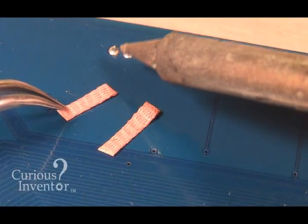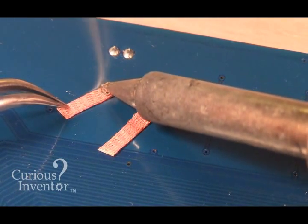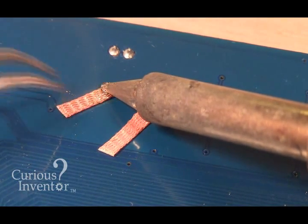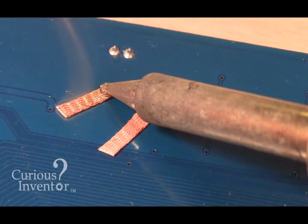We'll start with solder wick, which is a fine braid of copper strands that have been coated with flux. Capillary forces cause molten solder to wick into the braid.